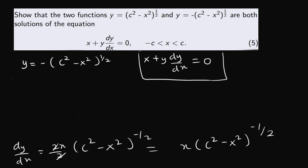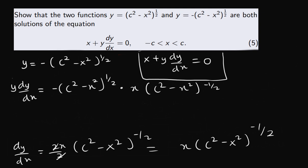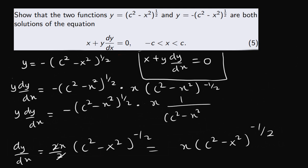Let's focus on y multiplying its derivative, that is y dy over dx. We know y to be minus c squared minus x squared to the power of half, and dy over dx to be x multiplying c squared minus x squared to the power of minus half. So y dy over dx equals minus c squared minus x squared to the power of half, times x, multiplying 1 over c squared minus x squared to the power of half. This cancels, leaving y dy over dx equal to minus x.